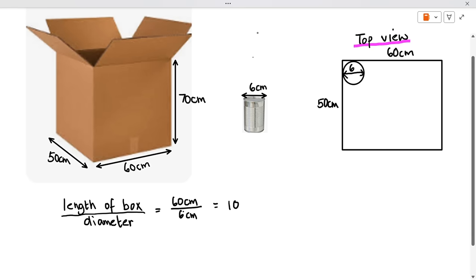If we're looking at the width, how many will fit along the other side? We're going to say width of the box divided by the diameter again, and here we will have 50 centimeters divided by 6 centimeters. Remember that your centimeters and centimeters will cancel out, so here we have 50 divided by 6, and your answer is 8.33, so basically 8.3 recurring.